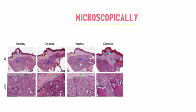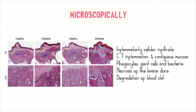Microscopically, in H&E staining of dry socket sections: aqua arrows point towards inflammatory cellular infiltration, primarily macrophages, giant cells, and T-cells; the yellow arrow points towards inflammation of connective tissue and the contiguous mucosa; the black arrows point towards necrosis of the lamina dura or socket lining; and there is also degradation of the blood clot.